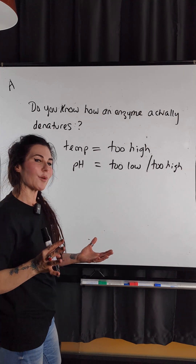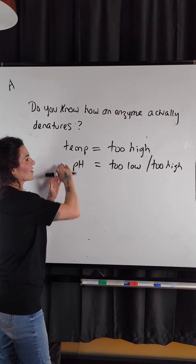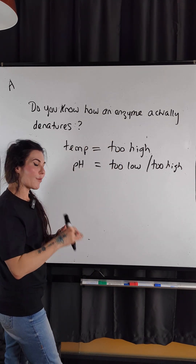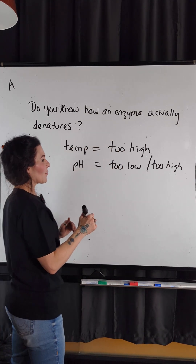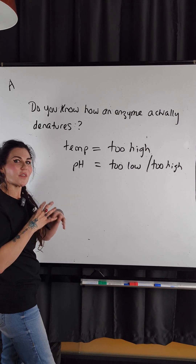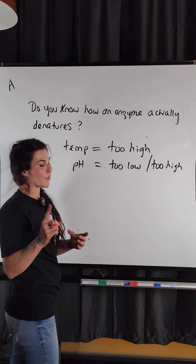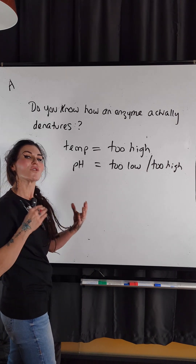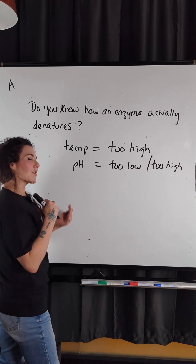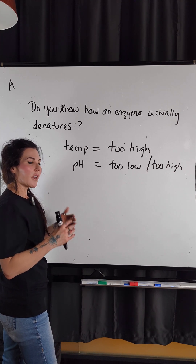But what actually happens? When an enzyme is subjected to conditions that are not optimum for that enzyme, then the bonds in the enzyme's tertiary structure — remembering it's a protein — start to break. And it's always the weaker of the bonds that exist there.